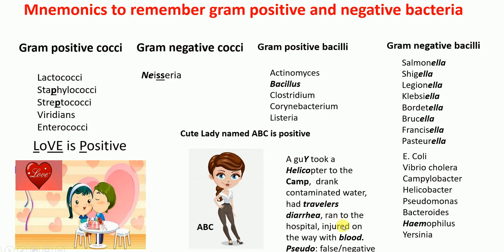He ran to the hospital and on the way he injured himself and blood came out. 'Blood' — in medical terminology, 'heem' refers to blood, as in hematology the study of blood. So blood corresponds to Hemophilus. Then we're left with Pseudomonas — 'pseudo' means false or negative, confirming it's gram-negative. Pseudomonas is also one of the most common causes of hospital-acquired infection.